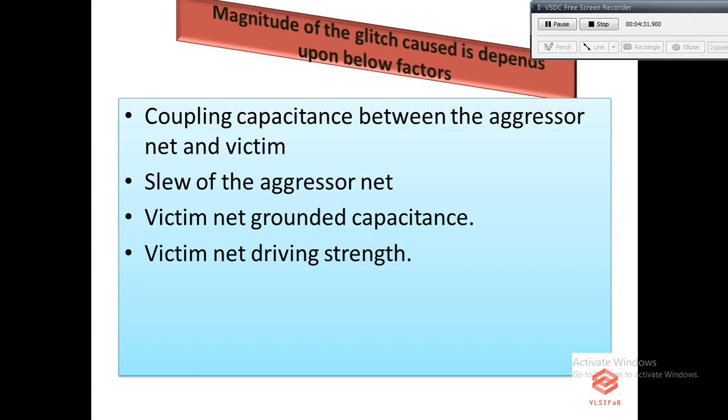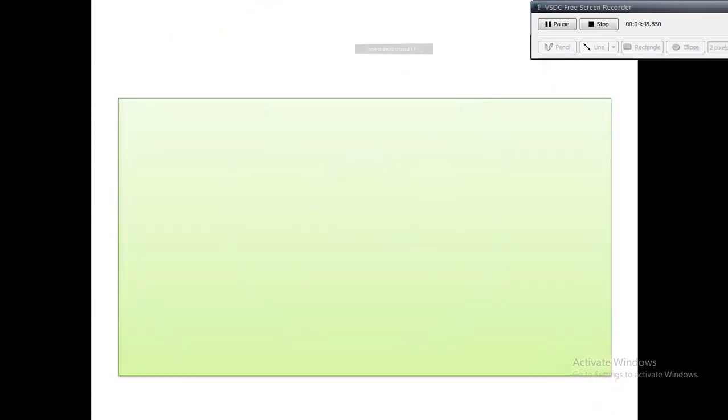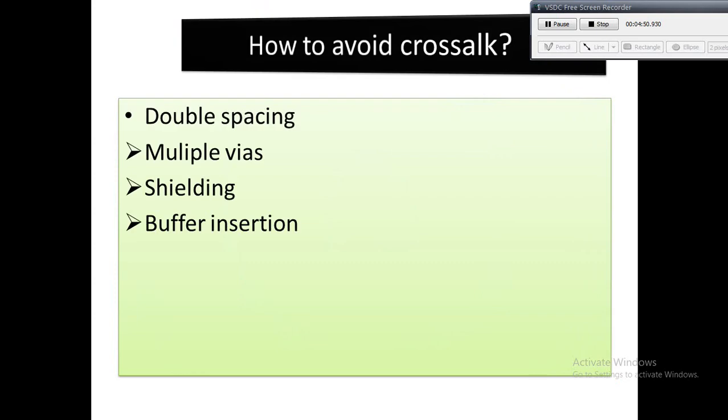Higher the victim net drive strength, less the crosstalk effect. You can observe in the next slide, we will discuss some ways to reduce crosstalk from physical design point of view. Now we will discuss a few techniques which we can implement from PD point of view to reduce crosstalk.